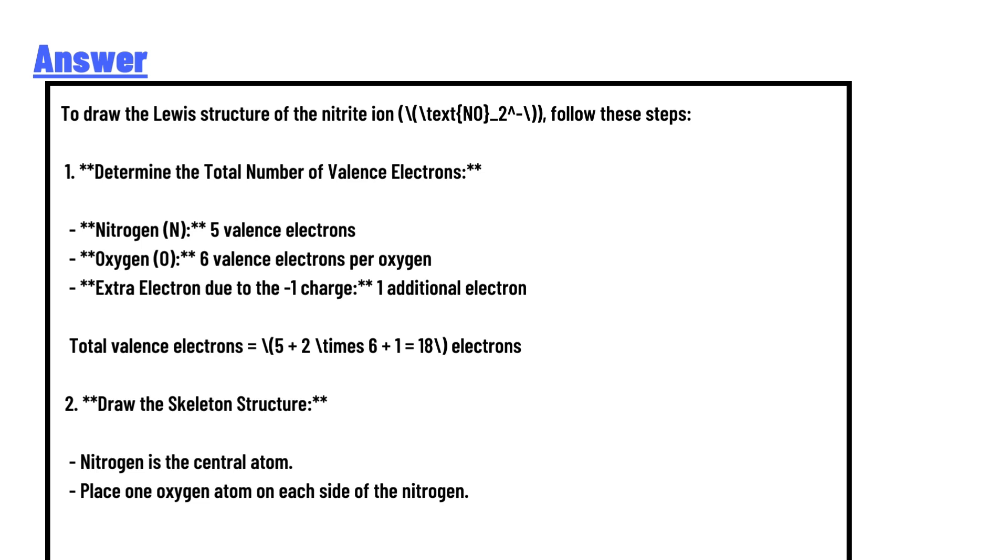After placing the lone pairs, check the nitrogen octet. It currently has four electrons from the bonds. It is necessary to complete the octet for nitrogen by converting one lone pair from one oxygen to form a double bond with the nitrogen. The final structure will have one double bond and one single bond.